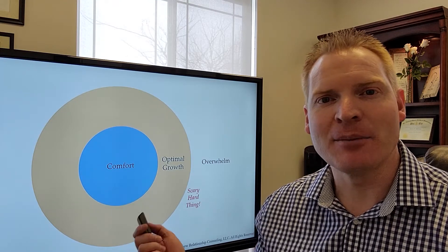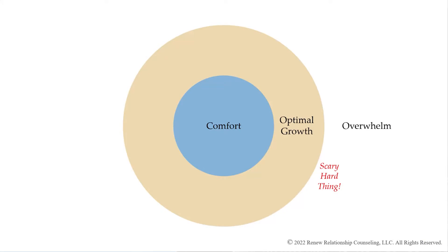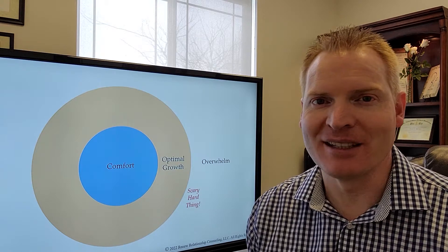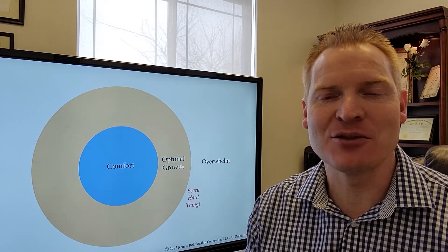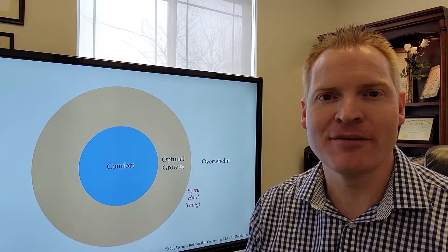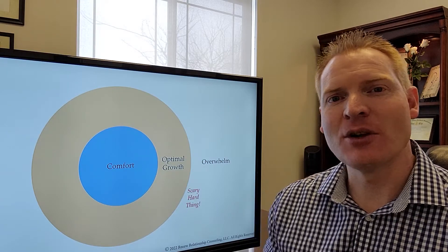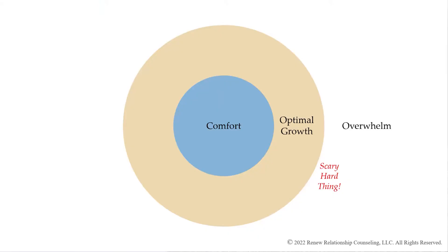What I have here behind me is a model that outlines where growth happens and where growth doesn't happen and how you can engage growth in your own individual life and in your relationship. So you'll notice here in the middle, we have this zone called comfort.